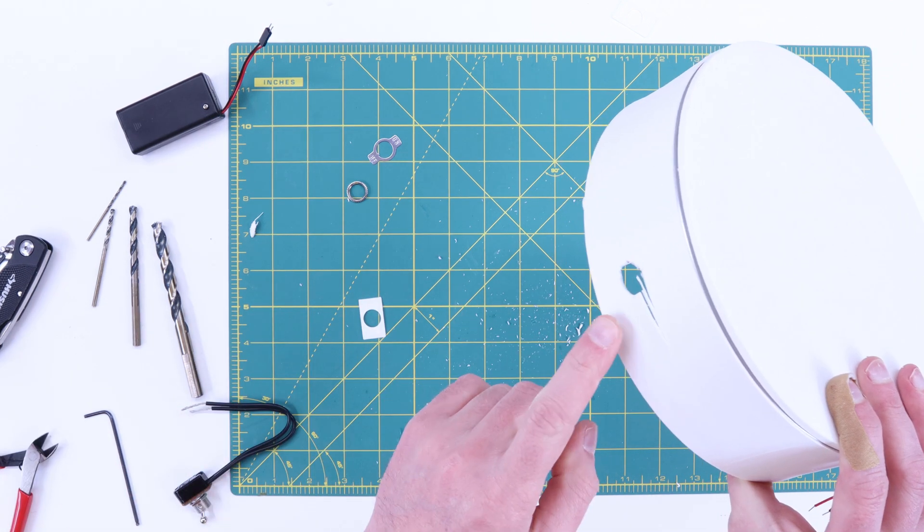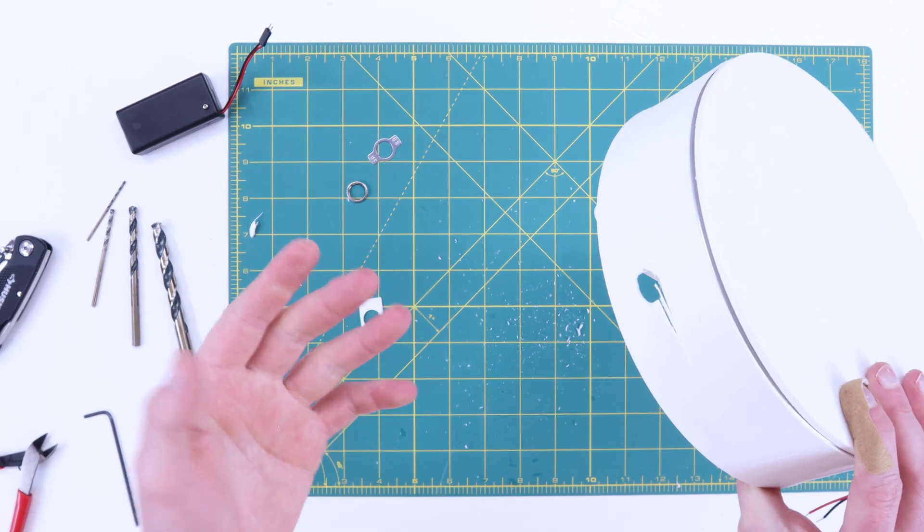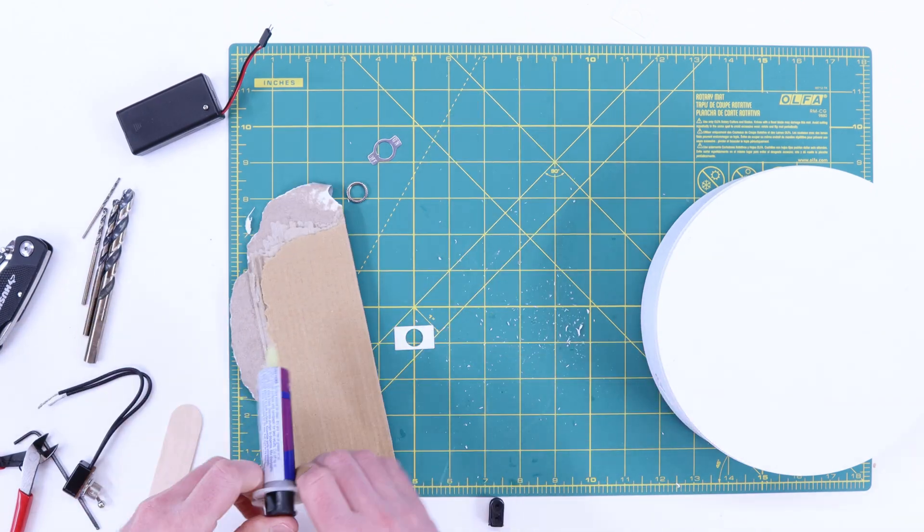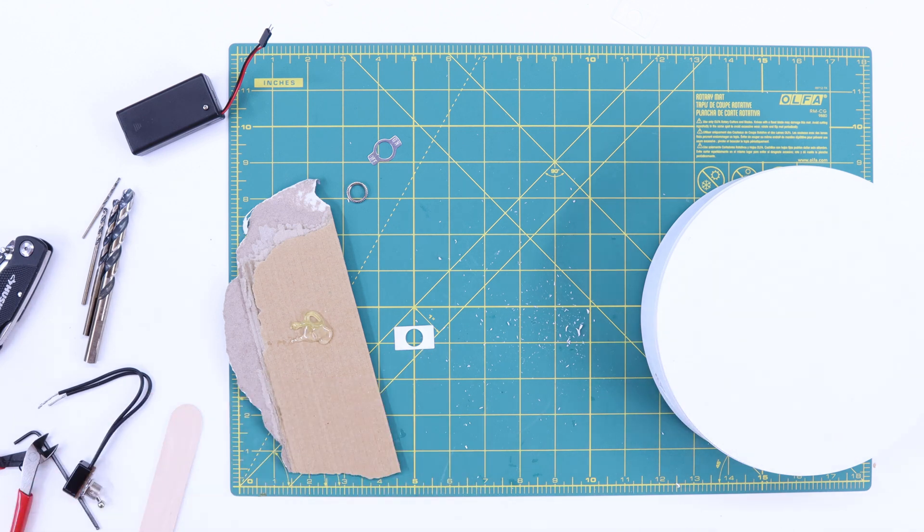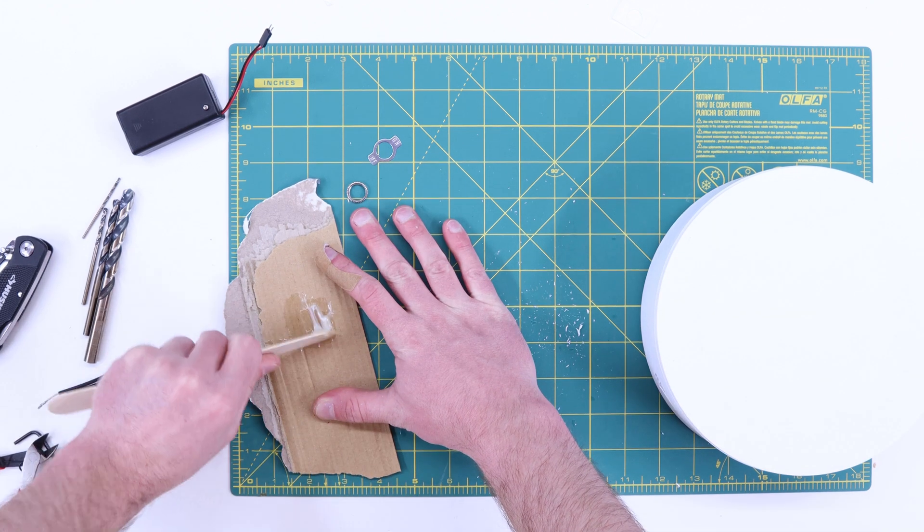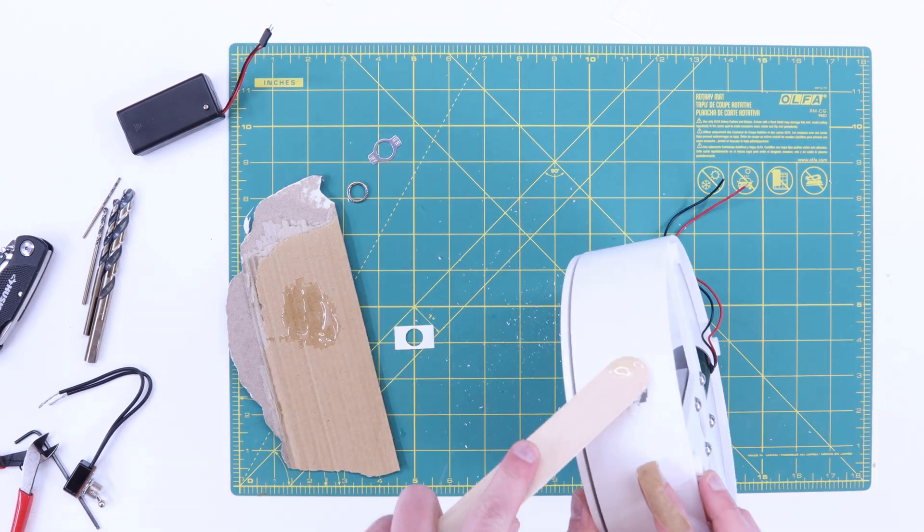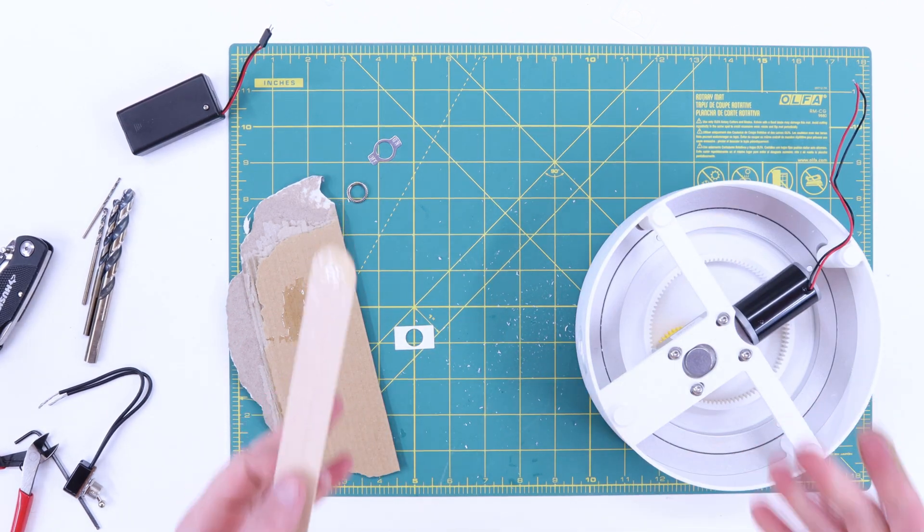Unfortunately, I did crack the ABS while drilling a hole for an on-off switch, but it's fine. I'll just run some epoxy on the inside. No big deal. Good as new.